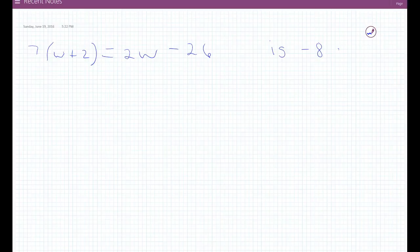So the problem you were given is 7 times w plus 2, and that part was in parentheses, equals 2w minus 26. And the question was, is negative 8 a solution?